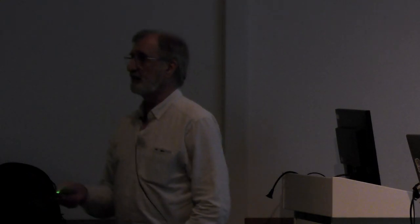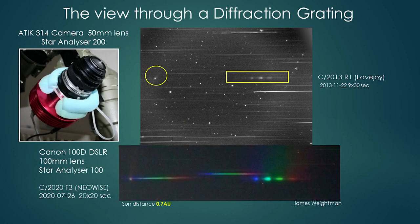How do we go about taking a spectrum of a comet? One of the easiest ways is to just take a camera with a lens on the front and stick a diffraction grating on the front of it and take an image. Here's one of my astro cameras with a 50 millimeter SLR lens, and mounted in a lens cap on the front is a 200 lines per millimeter star analyzer diffraction grating. If you take an image of a field with a comet, you see something like that.